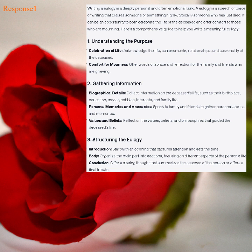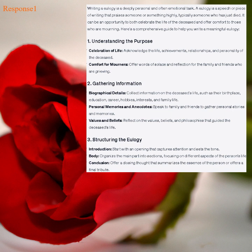Personal Memories and Anecdotes: speak to family and friends to gather personal stories and memories. Values and Beliefs: reflect on the values, beliefs, and philosophies that guided the deceased's life. 3. Structuring the Eulogy. Introduction: start with an opening that captures attention and sets the tone. Body: organize the main part into sections focusing on different aspects of the person's life. Conclusion: offer a closing thought that summarizes the essence of the person or offers a final tribute.